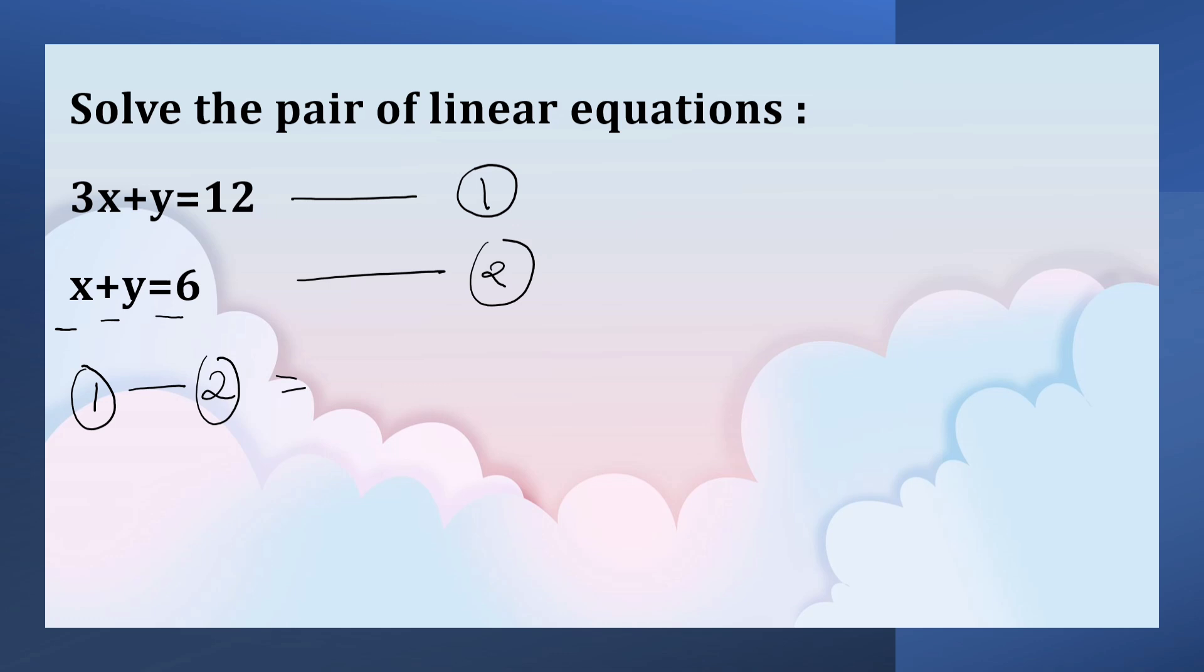So 3x minus x equals 2x. Y and y cancel. 12 minus 6 equals 6. So x equals 6 by 2, that equals 3.